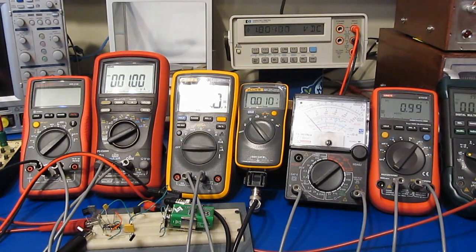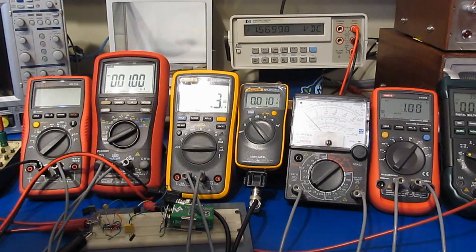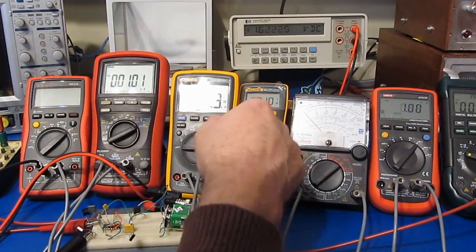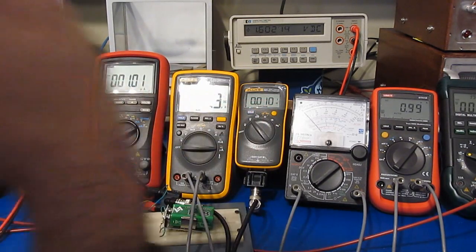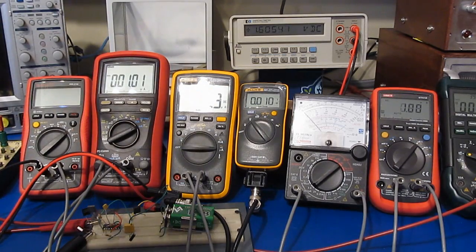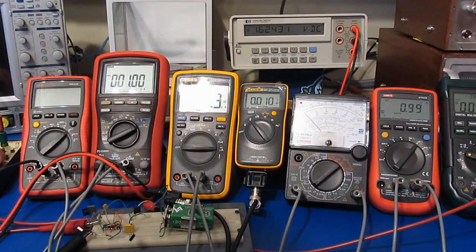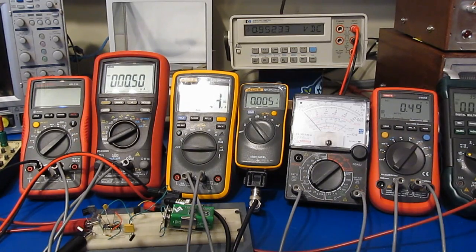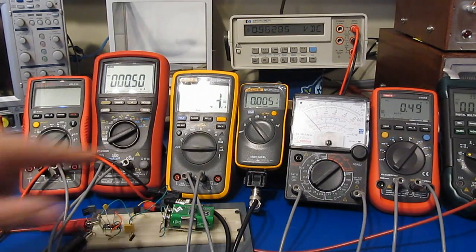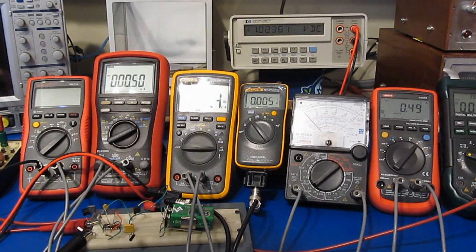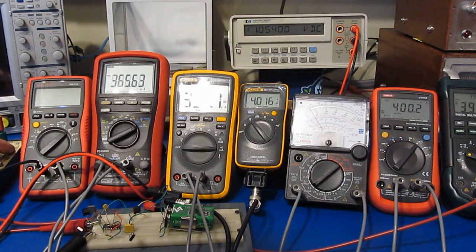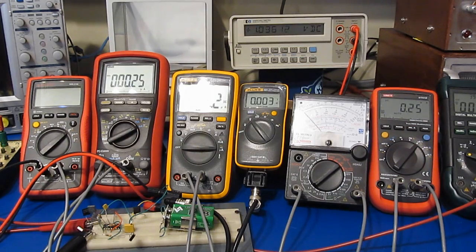I'll just go ahead and adjust the current down to 1 microamp. And again this is multiplied by 10. So you can see it's roughly 10 millivolts right now. Go a little bit lower. Let's double it again. This will be roughly 500 nanoamps. We'll double it again. So this will be 250 nanoamps.